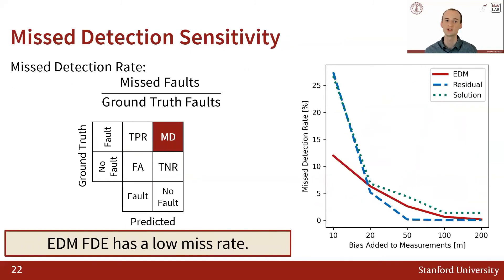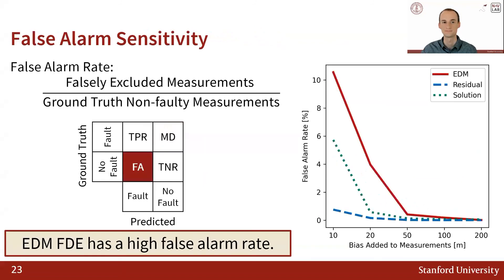Here, we show how the missed detection rate changes with respect to the magnitude of added bias. EDM-based FDE catches many more of the ground truth faults when the bias has a small magnitude and thus has a lower missed detection rate. However, that low missed detection rate does come at a price: EDM-based FDE gives more false alarms, indicating that it is more likely than residual-based or solution separation FDE to predict a non-faulty measurement is at fault.